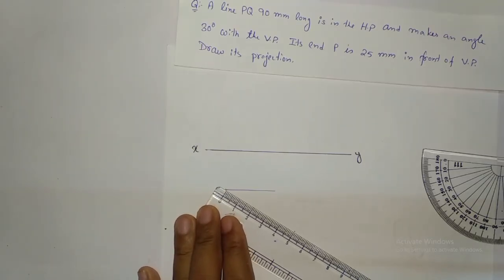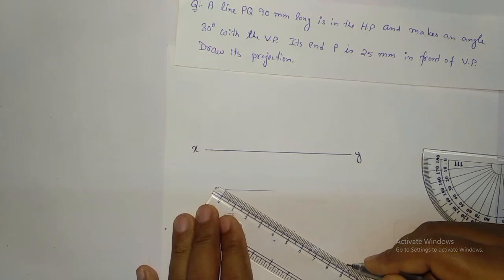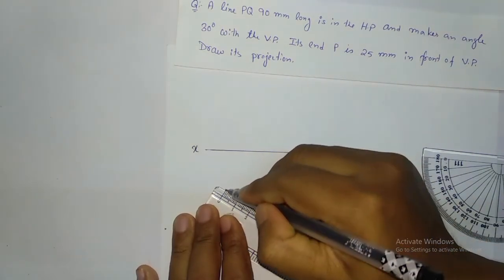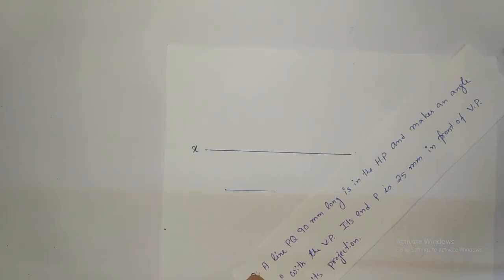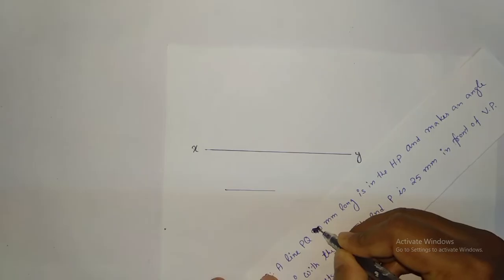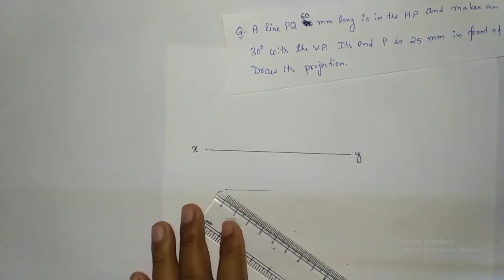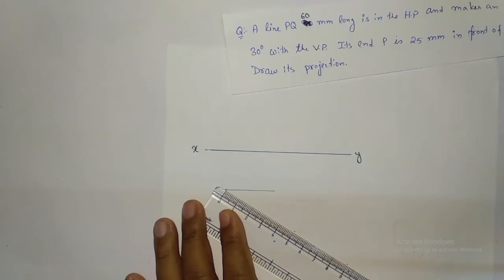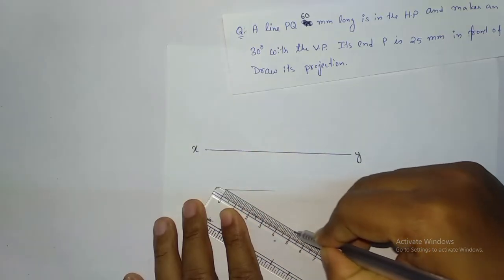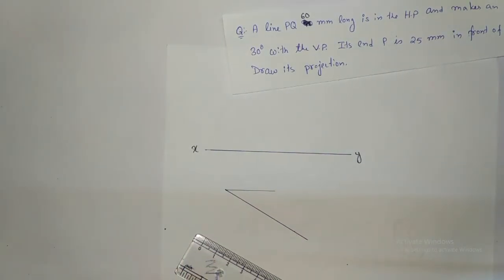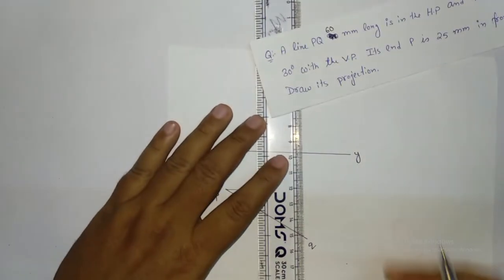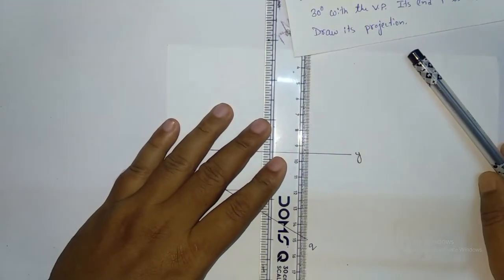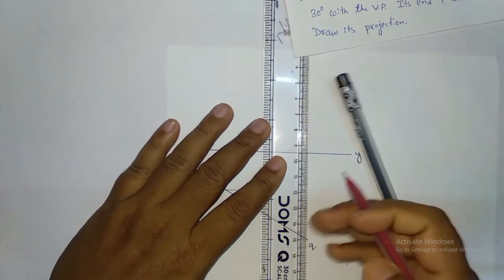The top view is of original length. The original length is 90 mm — but let me edit the question: suppose it is 60 mm instead of 90 mm. So this will be from here to here — this is 60 mm. This is your top view PQ. And from here to here, you can extend the line.